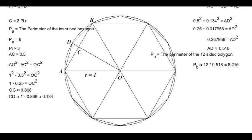The next step of this method would be to divide triangle AOD in half, similar to how we divided AOB in half, and then repeat the method to find the perimeter of the new 24-sided polygon. Archimedes continued this until he had a 96-sided polygon inscribed inside the circle.